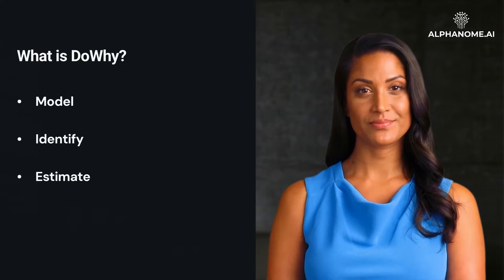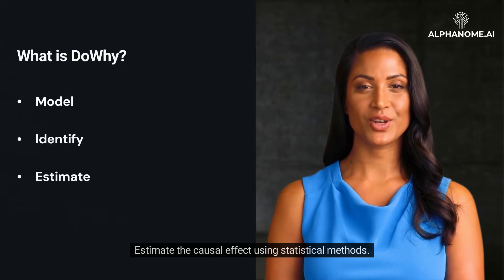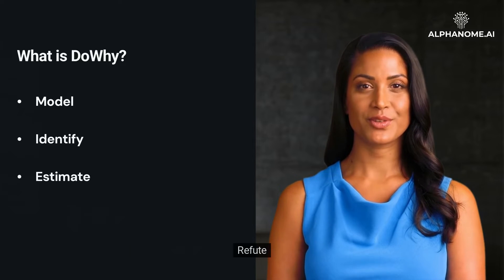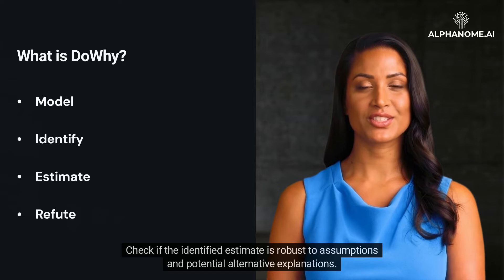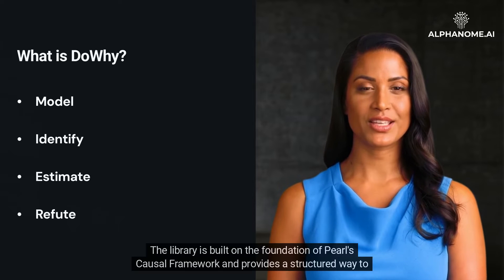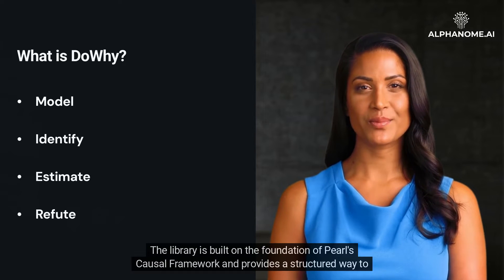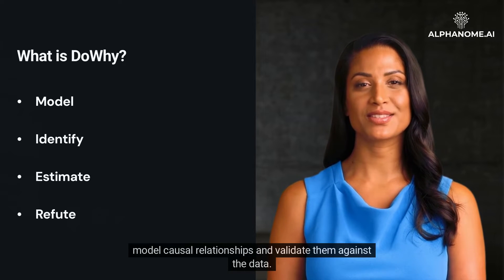Step three: Estimate — estimate the causal effect using statistical methods. Step four: Refute — check if the identified estimate is robust to assumptions and potential alternative explanations. The library is built on the foundation of Pearl's causal framework and provides a structured way to model causal relationships and validate them against the data.